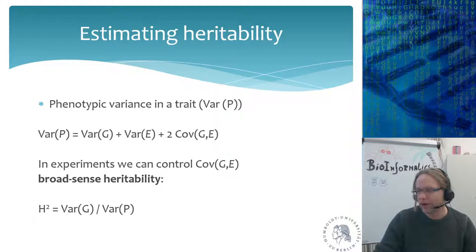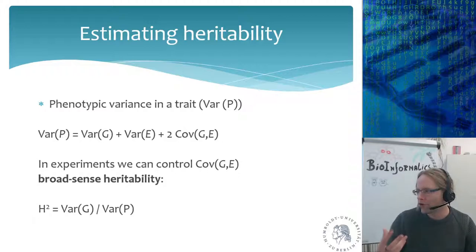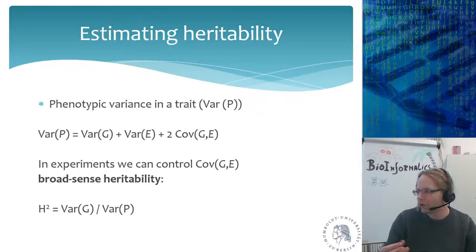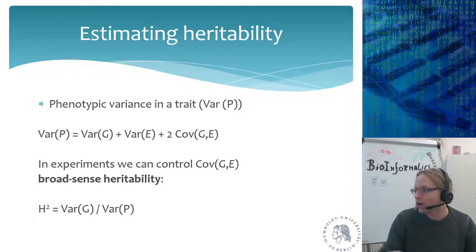Heritability is always written as H², due to Sewell Wright. That was decided around 1900 when they were doing the first calculations of heritability. The guy who came up with one of the first papers used H as the correlation coefficient, which we now call R. Because H was the correlation coefficient, the variance explained by the correlation is H squared, so we always talk about H to the power of 2.